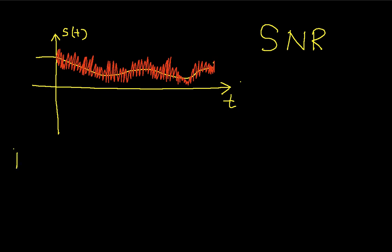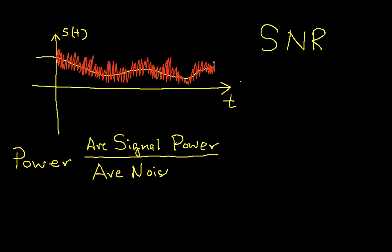One is called a power signal-to-noise ratio, where you would have the signal, or the average signal power in volts-squared, divided by the average noise power, again in volts-squared.